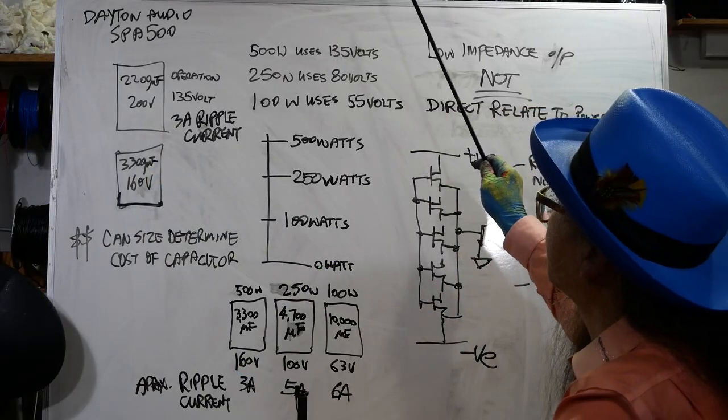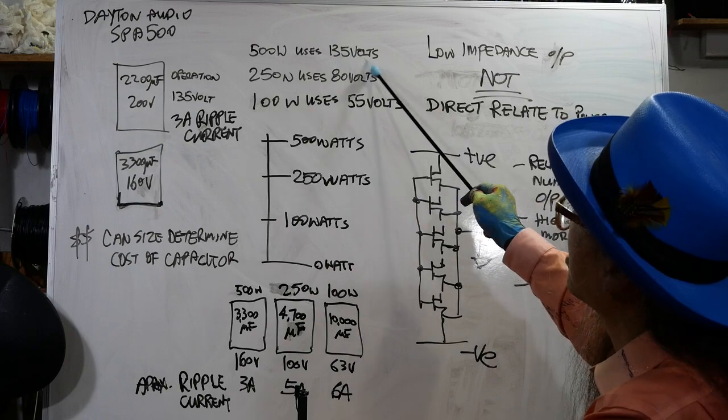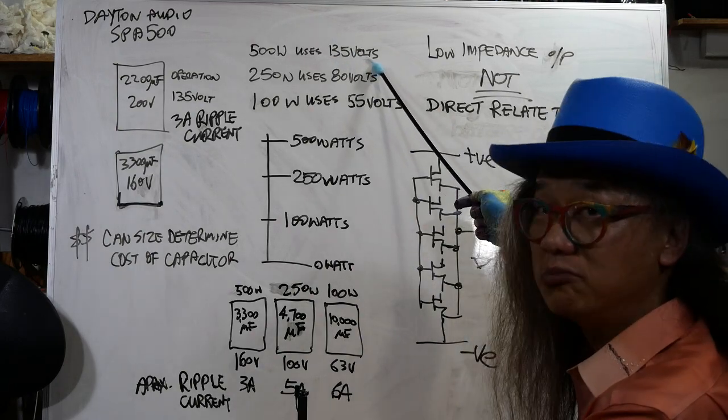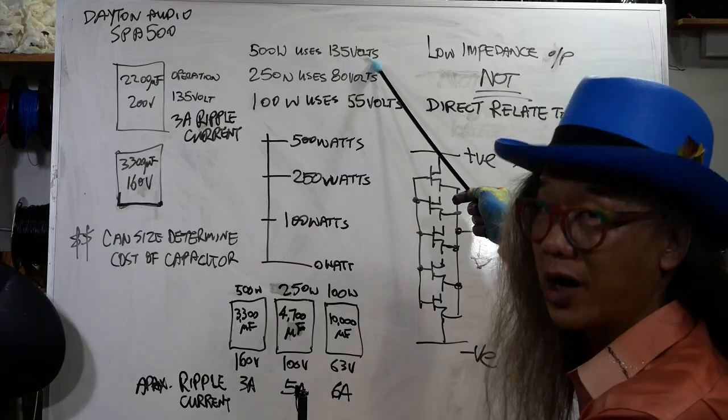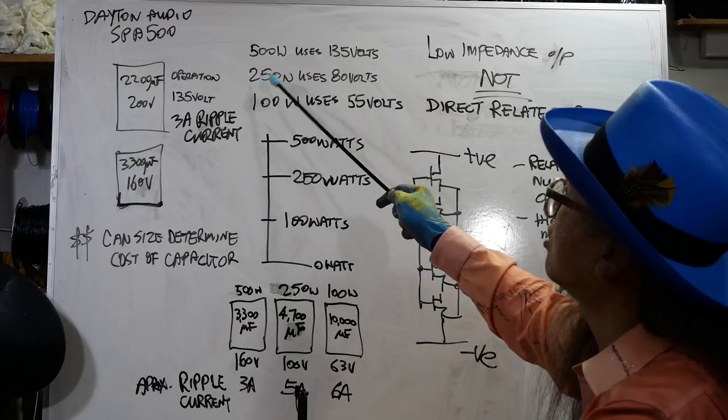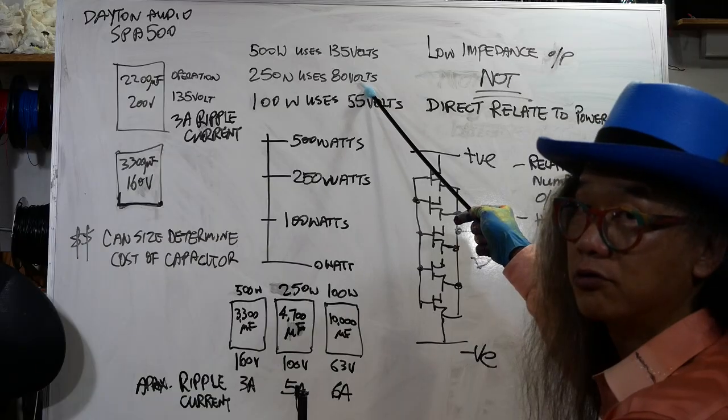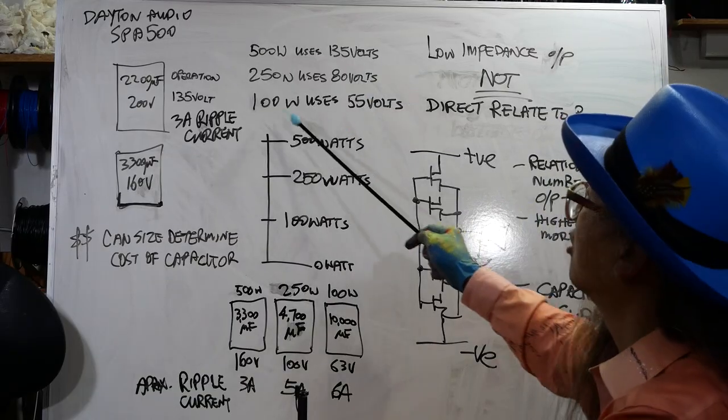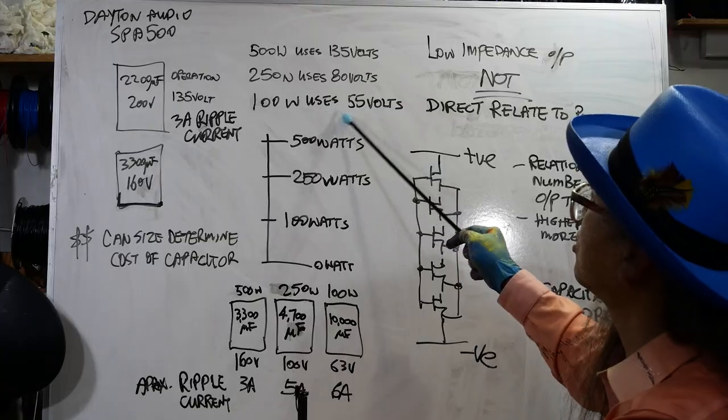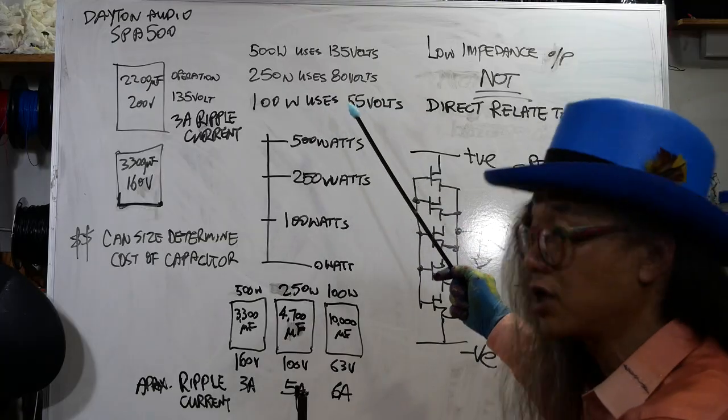A 500 watt uses 135 volt, actually should be lower, but this amp is a little higher than what I expect. Because most 250 watt uses 80 volt rail, so you can use a 100 volt capacitor. 100 volt uses 55 volt rail, so you can use a 63 volt.